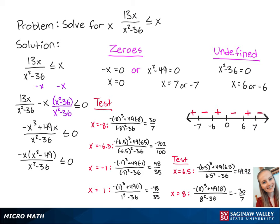This means that x must be between negative 7 and negative 6, between 0 and 6, and greater than 7. So x ranges from negative 7 inclusive to negative 6 exclusive, or 0 inclusive to 6 exclusive, or 7 inclusive to infinity exclusive. And this is the final answer.